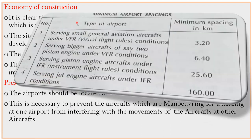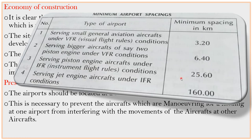The required minimum separation distance depends on the type of airport. For small general aviation aircraft under VFR (Visual Flight Rules) conditions, the minimum is 3.2 km. For bigger aircraft with two piston engines under VFR, it is 6.40 km. For piston engine aircraft under IFR conditions it is 25.60 km, and for jet engine aircraft under IFR conditions it is 160 km. These standards are given by ICAO — the International Civil Aviation Organization.